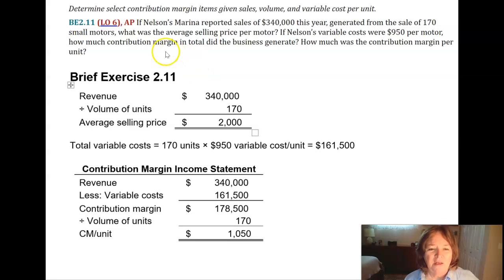It's got to be really easy for you. So this marina reported sales of $340,000 this year, generated from the sale of 170 small motors. And the question is, what was the average price per motor?